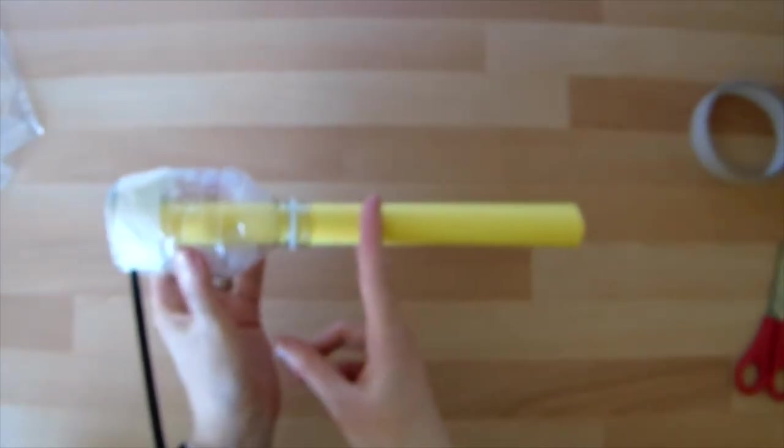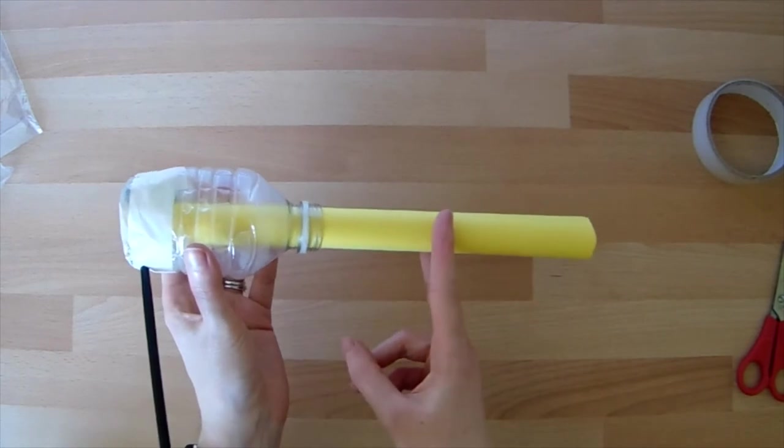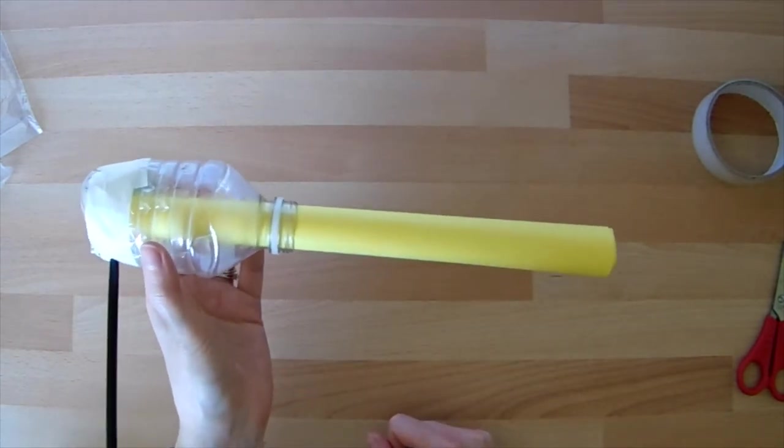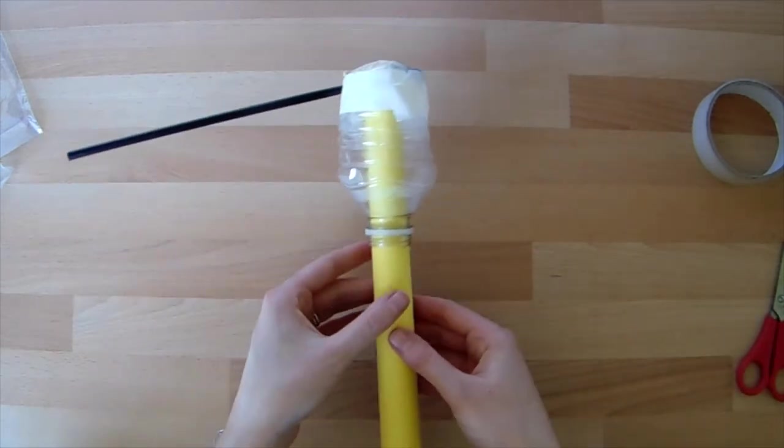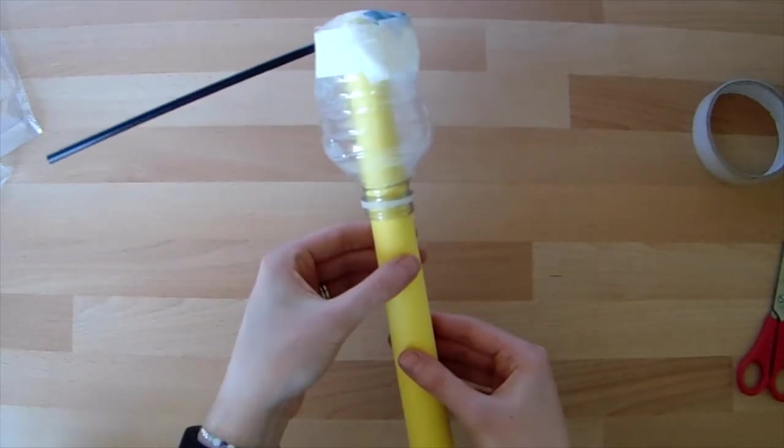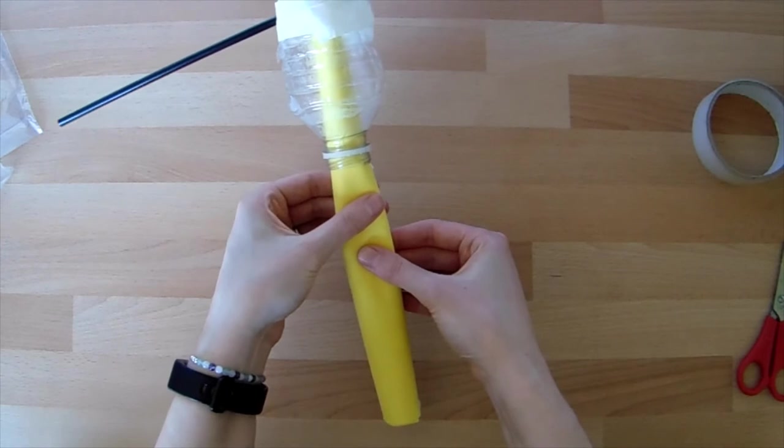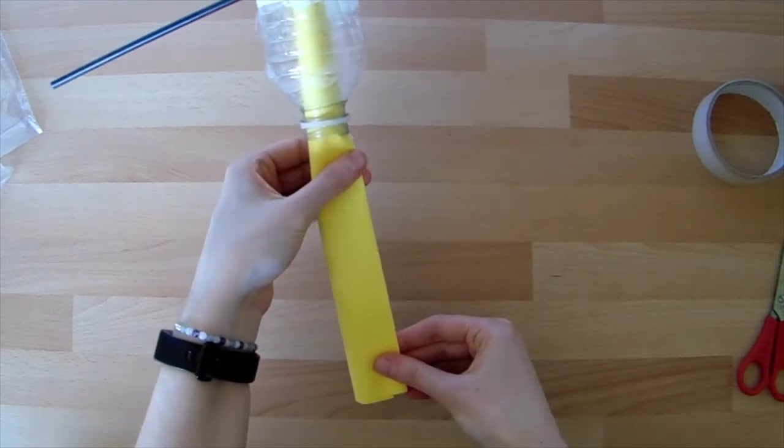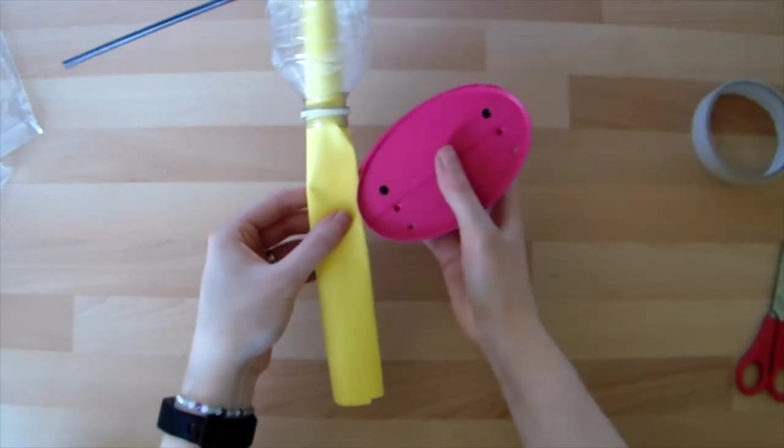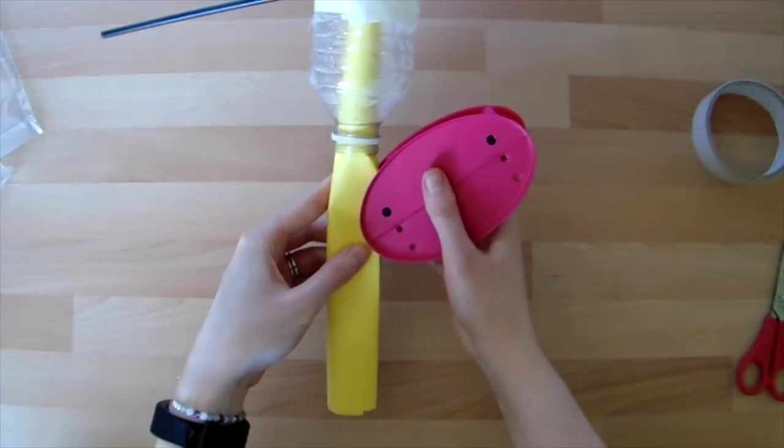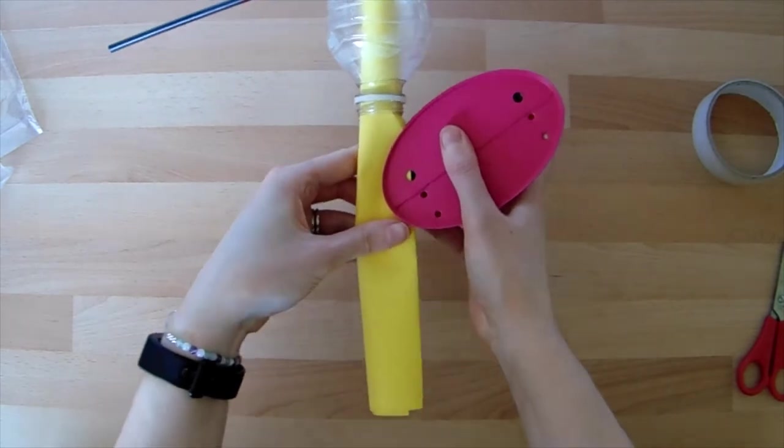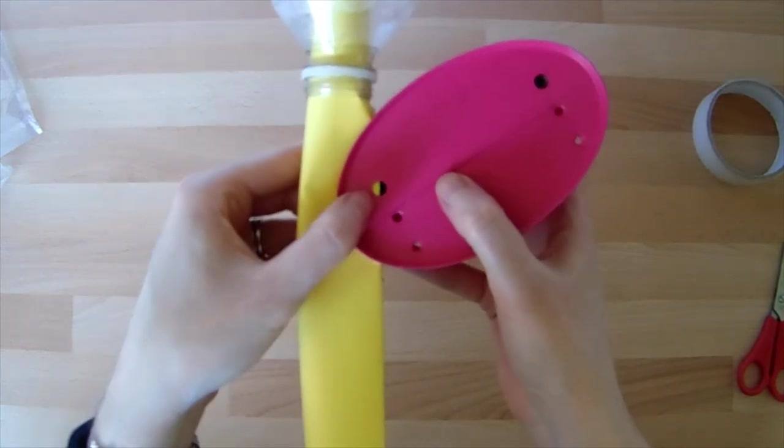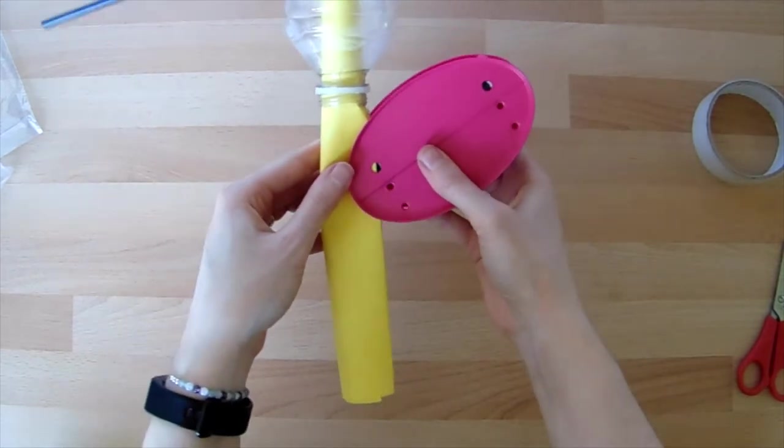If we cut the tube to different lengths we could change the pitch, but an easier way to do it is to put some little holes to cover with our fingers, and that will help us change the pitch. I'm going to flatten my tube slightly with my fingers by pinching all the way along and then use my hole punch again. I'm going to punch little half circles down my tube.